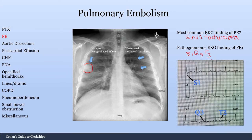What is the pathognomonic EKG finding of a pulmonary embolism? That would be the S1Q3T3 — an S wave in lead 1, a Q wave in lead 3, and an inverted T wave in lead 3 as well.